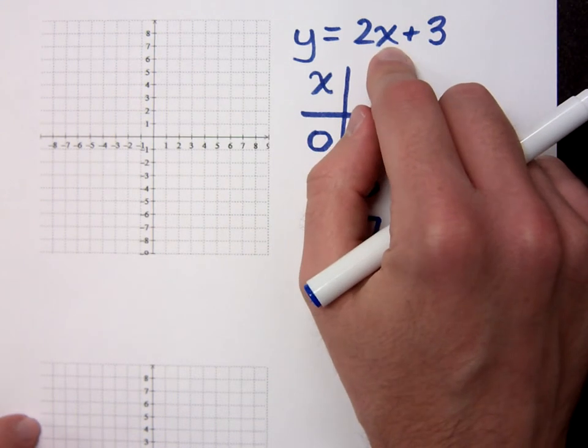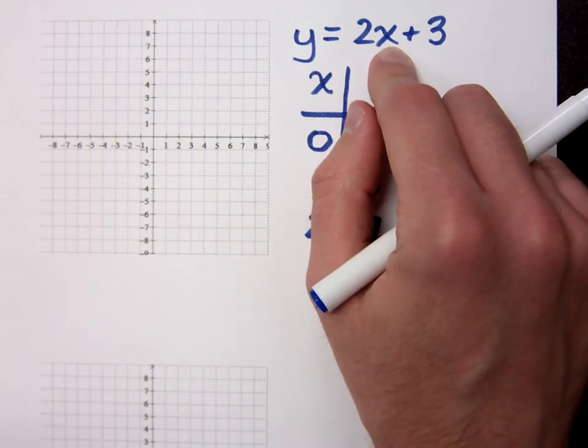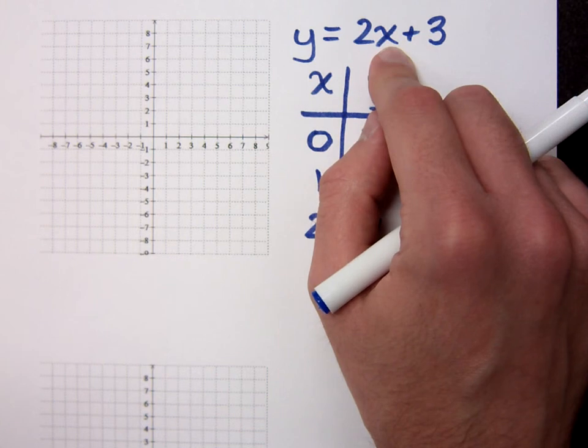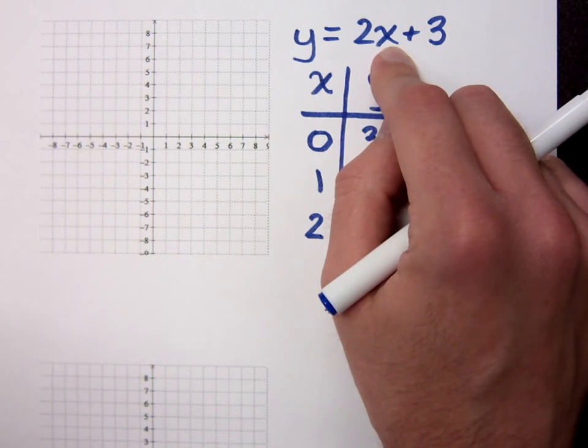You should know though that this guy is, what adjective would you use to describe this guy? Linear. Linear, which means his graph is a line.